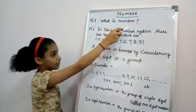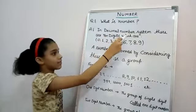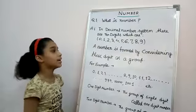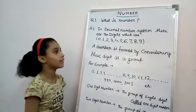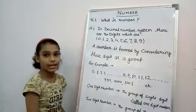In decimal number system, there are 10 digits which are 0, 1, 2, 3, 4, 5, 6, 7, 8, and 9.